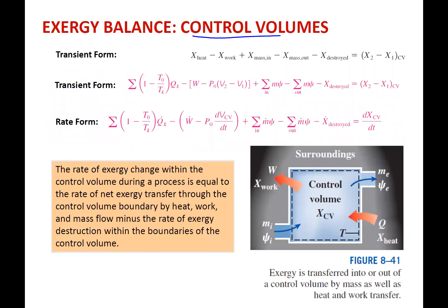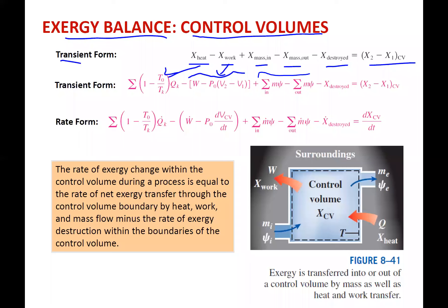Now changing to control volumes and the exergy balance. We have heat, work, and mass that can cross, X-destroyed, and then any change. This is the transient form, if it was filling or emptying a control volume. This substitutes in for the different sections — here is our work, here is from mass flow rate, X-destroyed, and same there. In the rate form, here's from heat, and all this in that parentheses is the work useful, which is work minus the work on the surroundings.